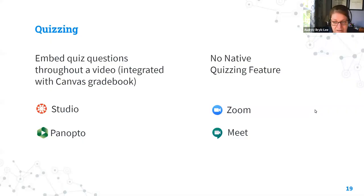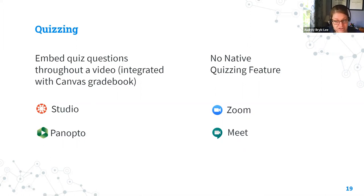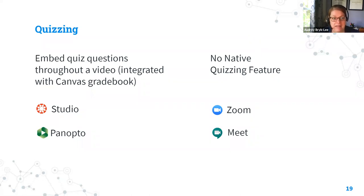Quizzing is where we flip-flop from that last feature. We can't verbally interact in real time, but we can have students meaningfully engage with video content we've created with Studio and Panopto using the quizzing feature. The question types are basic in both tools — multiple choice, true and false, that kind of stuff. Panopto does have one additional type that Studio doesn't, which is matching, but neither of them have any kind of short answer or essay questions.